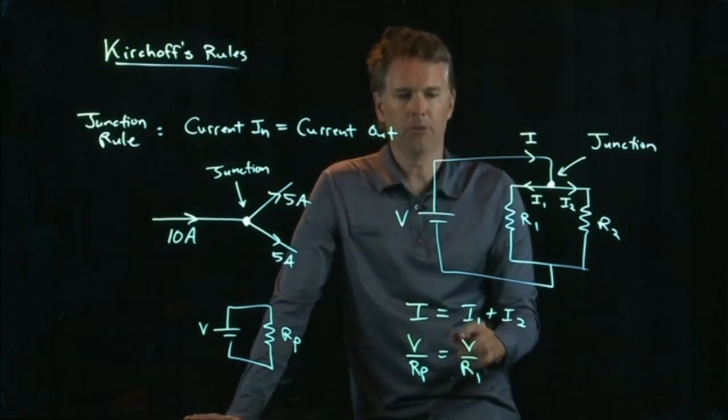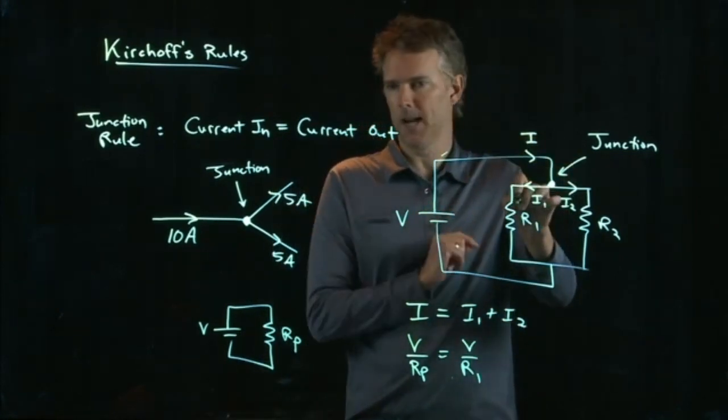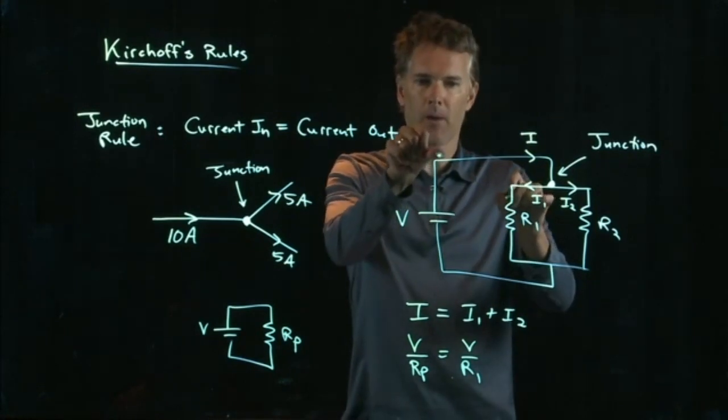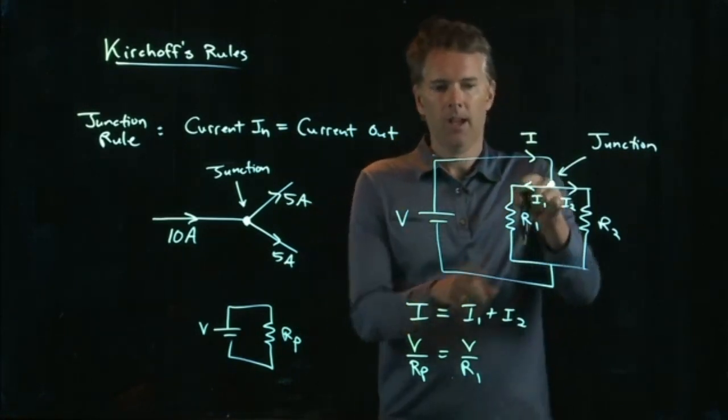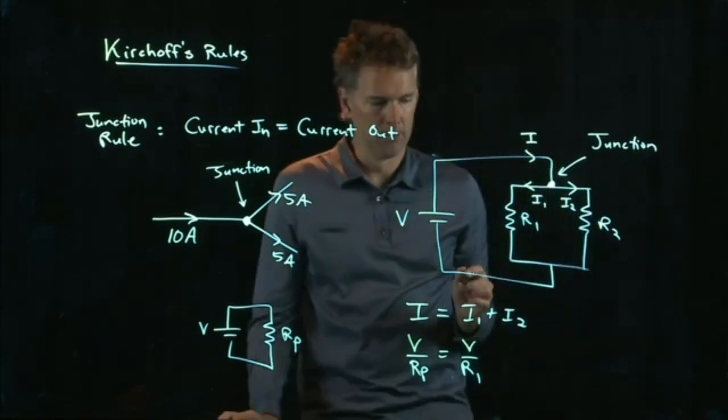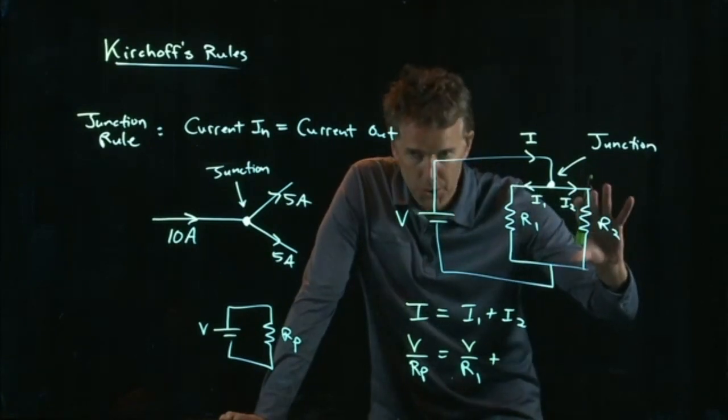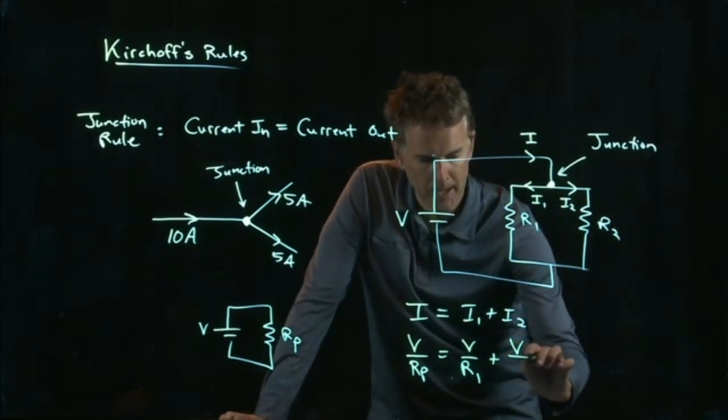But it's the same voltage, right? This is a wire all the way to the top of R1. And so that wire is an equipotential, and so the voltage across R1 is the battery voltage. But likewise, the voltage across R2 is also just the battery voltage.